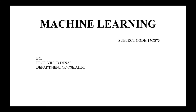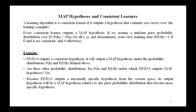Hello students. Last class I discussed Bayes theorem and concept learning, including the brute force Bayes concept learning algorithm and necessary derivations in detail. In today's class I am going to discuss MAP hypothesis and consistent learners. The previous analysis shows that in the given setting, every hypothesis consistent with capital D is a MAP hypothesis. This statement translates directly into an interesting statement about a general class of learners.